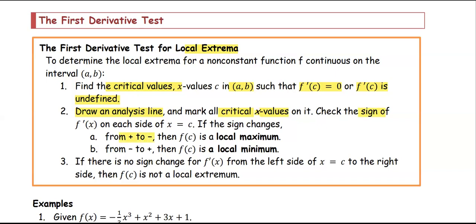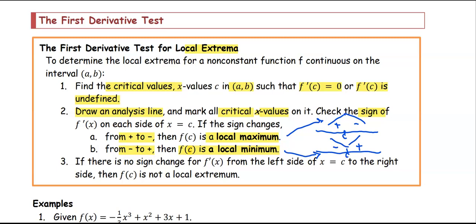If the sign of f' changes from positive to negative, the point x equals c gives you a local maximum. If the sign changes from negative to positive, the point c is a local minimum. On the number line, if the sign changes from positive to negative, the graph goes from increasing to decreasing, so c gives you a local max. If the sign changes from negative to positive, the graph goes from decreasing to increasing, giving a local minimum. If the sign does not change from left to right, there is no local max or local min.